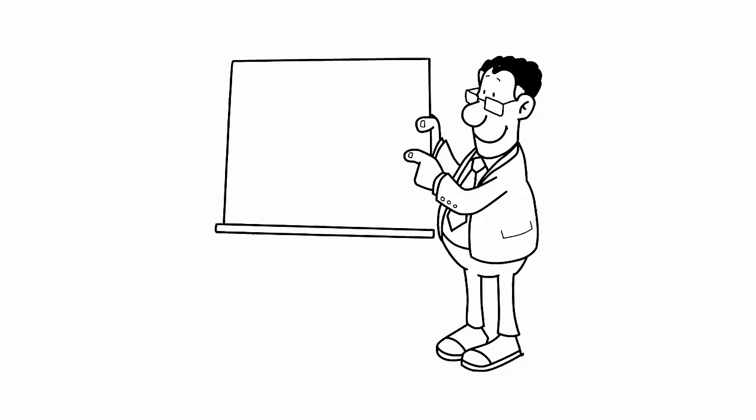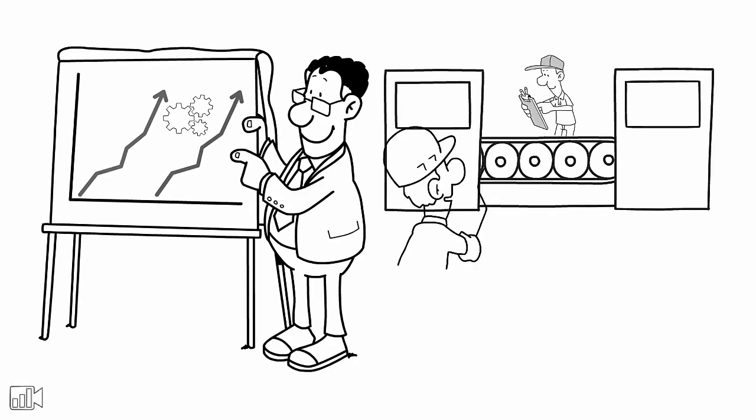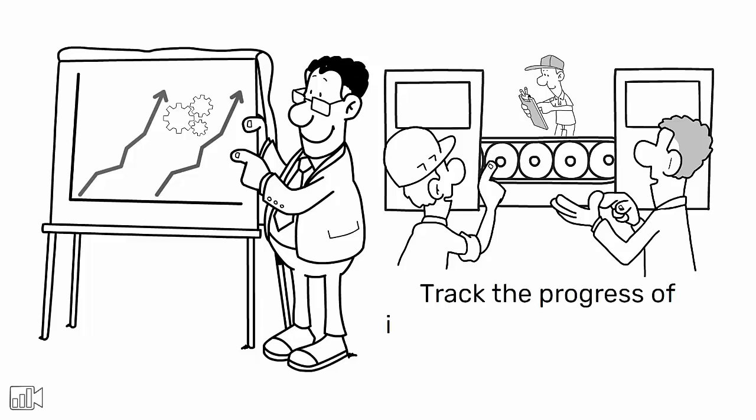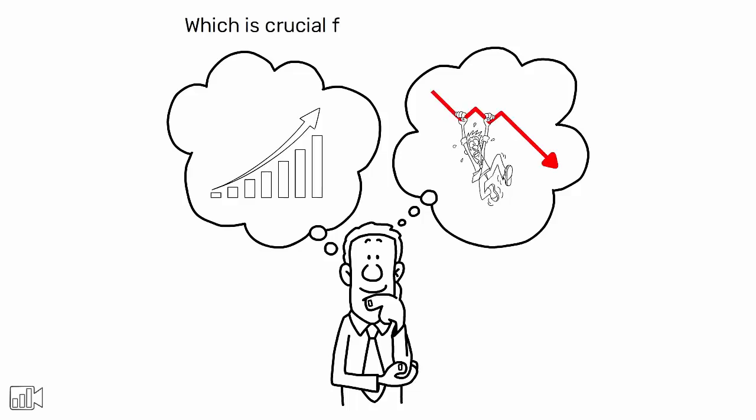Gemba walks also foster a culture of continuous improvement. By regularly walking the floor, engineers can track the progress of implemented changes and gauge their effectiveness. It provides an opportunity to see if improvements are sustained over time or if old habits resurface, which is crucial for the long-term success of lean initiatives.